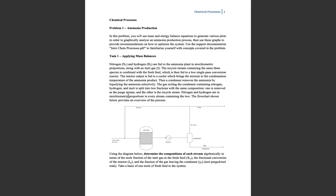The problem given to us is ammonia production. Nitrogen and hydrogen are fed into an ammonia plant along with an inert gas. The recycled stream containing these gases is combined with a fresh feed which is then passed through a low single-pass conversion reactor. The reactor output is fed to a cooler which brings the mixture to the condensation temperature of the ammonia product. The condenser removes the ammonia by liquefying it.